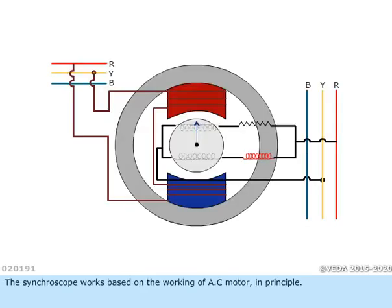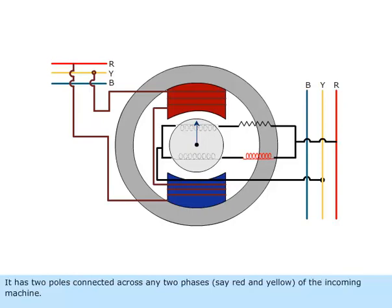The synchroscope works based on the working of AC motor in principle. It has two poles connected across any two phases, say red and yellow, of the incoming machine.